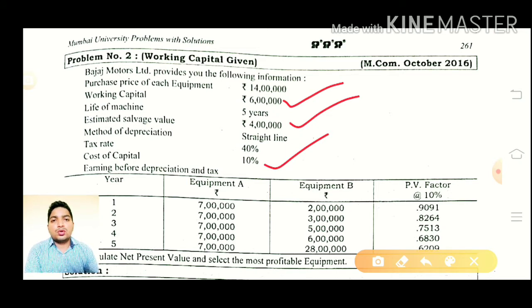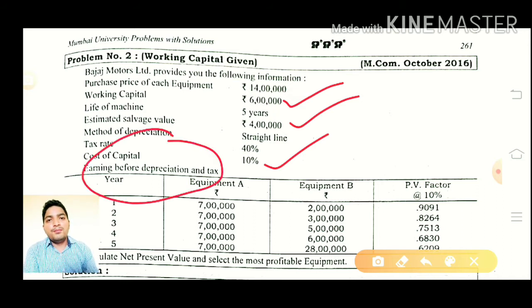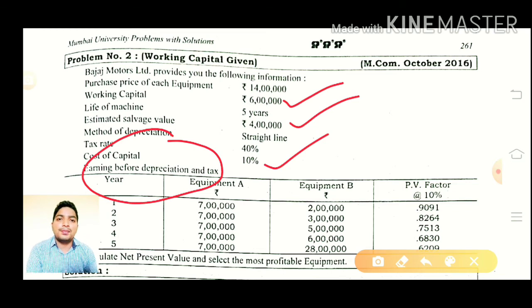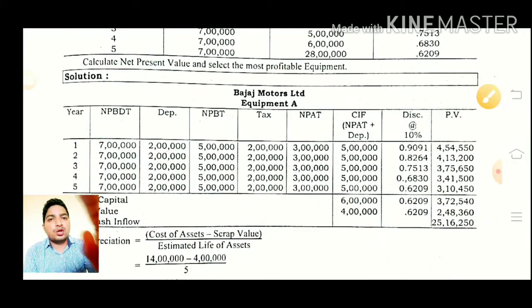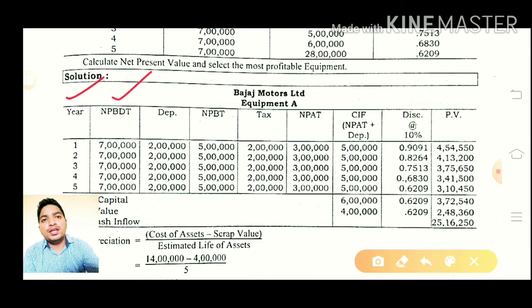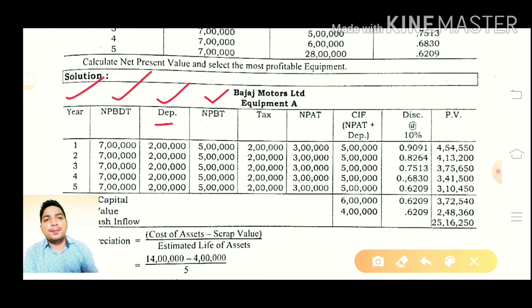So, with all the changes given, we calculate profit before depreciation and tax, then less depreciation to get profit after depreciation, then less tax. After that, we get cash inflow. The solution table has columns: first year, second year, third year — with net profit before depreciation and tax, less depreciation.